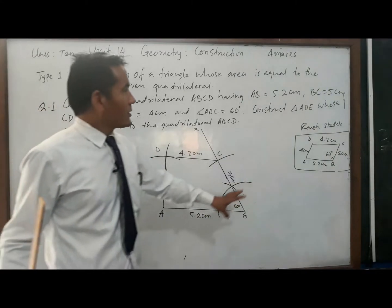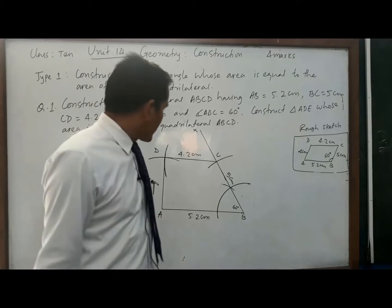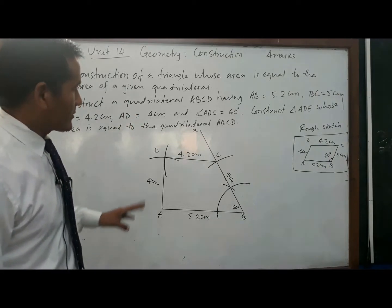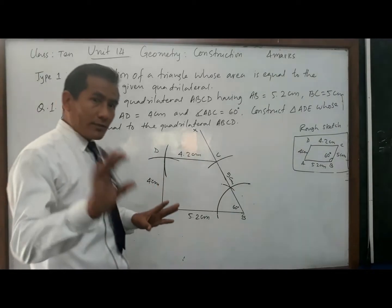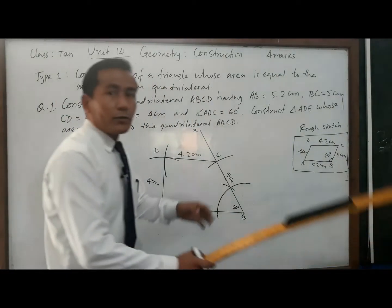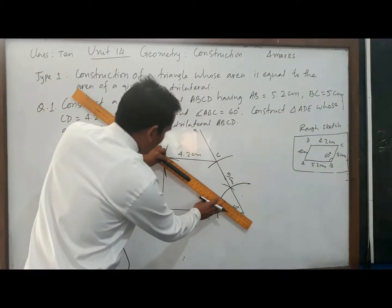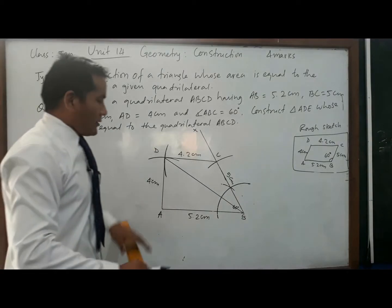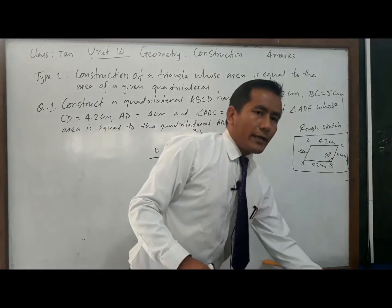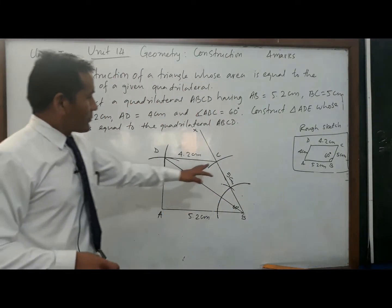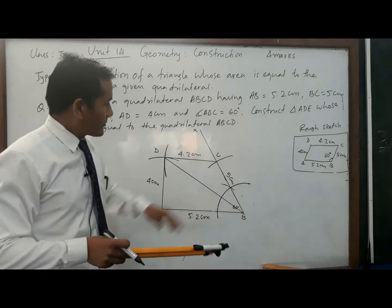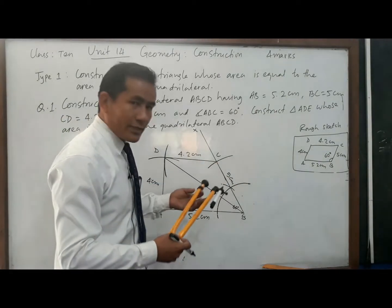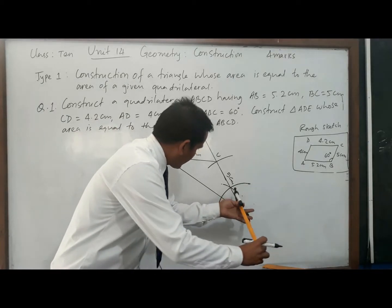Now we have to construct a triangle whose area equals the area of the quadrilateral. We have completed quadrilateral ABCD. For this, remember: we have to join the diagonal first. Join BD. After joining diagonal BD, we have to construct a line through vertex C that is parallel to the diagonal BD.